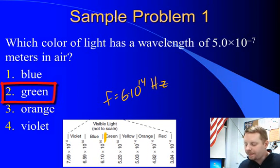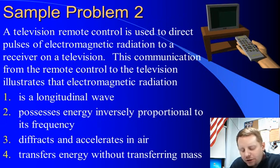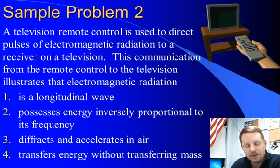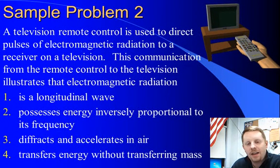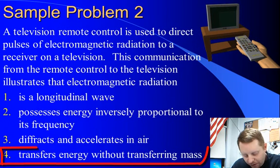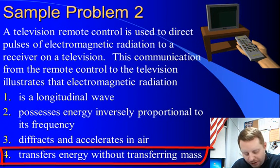Number two. A television remote control is used to direct pulses of EM radiation to a receiver on a television. This communication from the remote control to the television illustrates that the electromagnetic radiation is a longitudinal wave, possesses energy inversely proportional to its frequency, diffracts and accelerates in air, or four, transfers energy without transferring mass. Well, of course, the answer has to be four. Waves transfer energy without transferring mass.